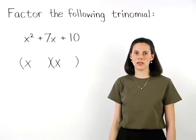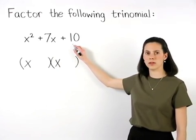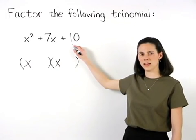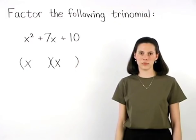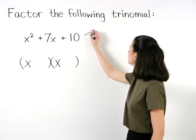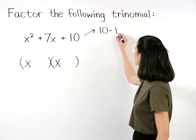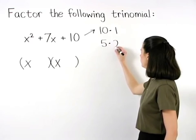The second term in each binomial will be a factor of our constant term, which in this case is ten. The trick is ten factors in different ways. Ten can be thought of as ten times one, but it can also be thought of as five times two.